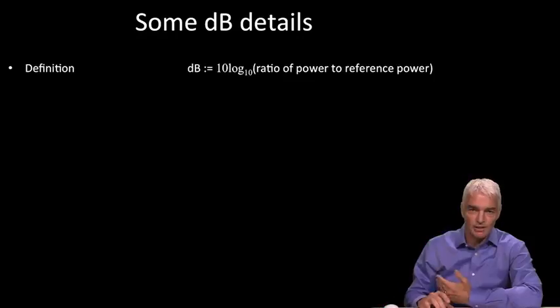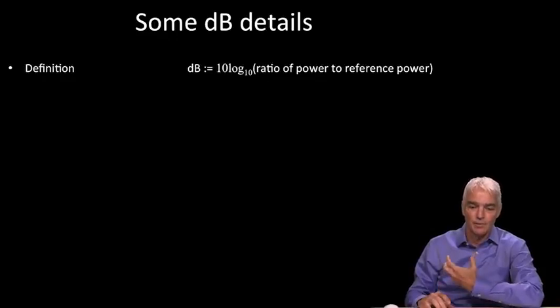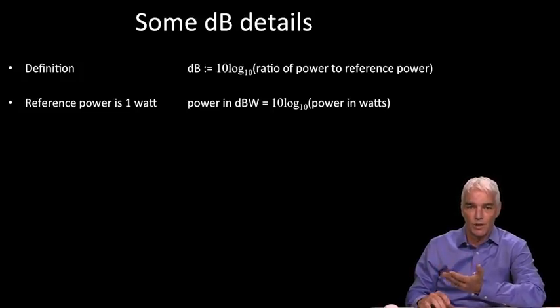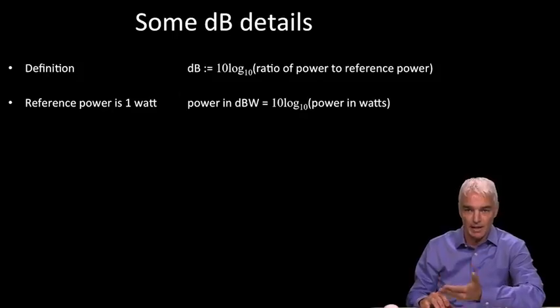So, now let's go over some details. First of all, the definition. A decibel: dB = 10log₁₀(ratio of power to reference power). And often, we have a power that we're measuring, and we'll take the ratio of that to some reference power. For example, if the reference power is 1 watt, then we talk about dB watts or dBW, and power in dBW is just 10log₁₀ of power in watts.